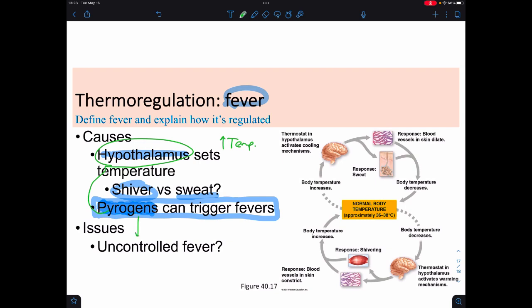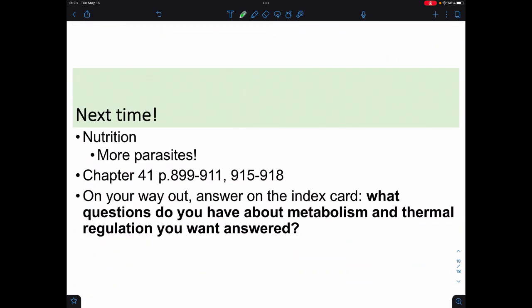But sometimes pyrogens can reset the hypothalamus to an uncontrollable level, and that's what we call an uncontrolled fever. And this is actually dangerous because once you reach about 107 degrees Fahrenheit, your body can't regulate itself. And all of your chemistry gets thrown out of whack because chemical reactions are temperature-dependent. This is a bad situation for things that wish to stay alive. Next time, we're going to put all this into practice with nutrition.